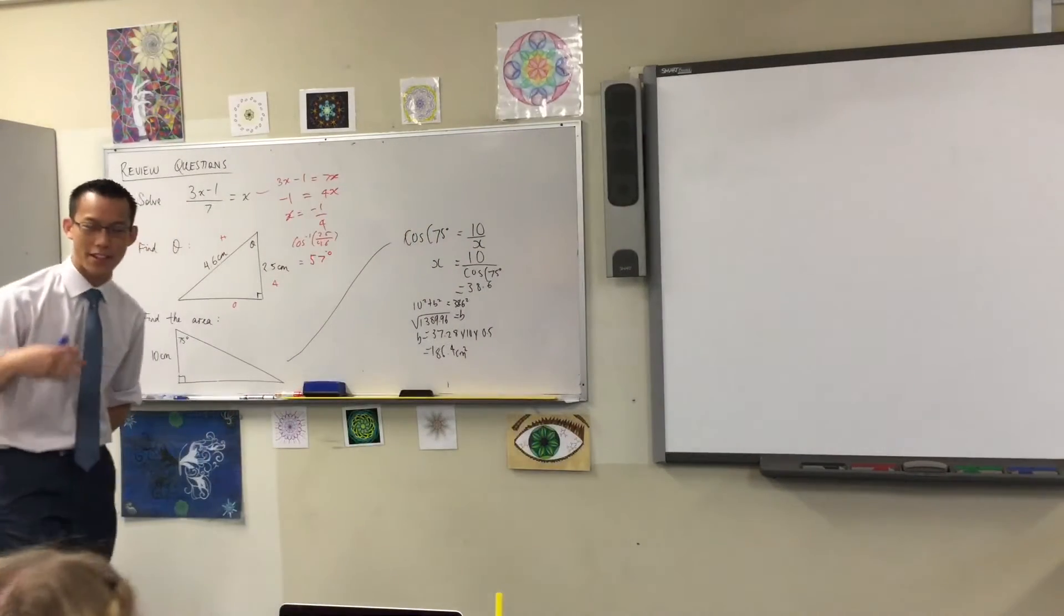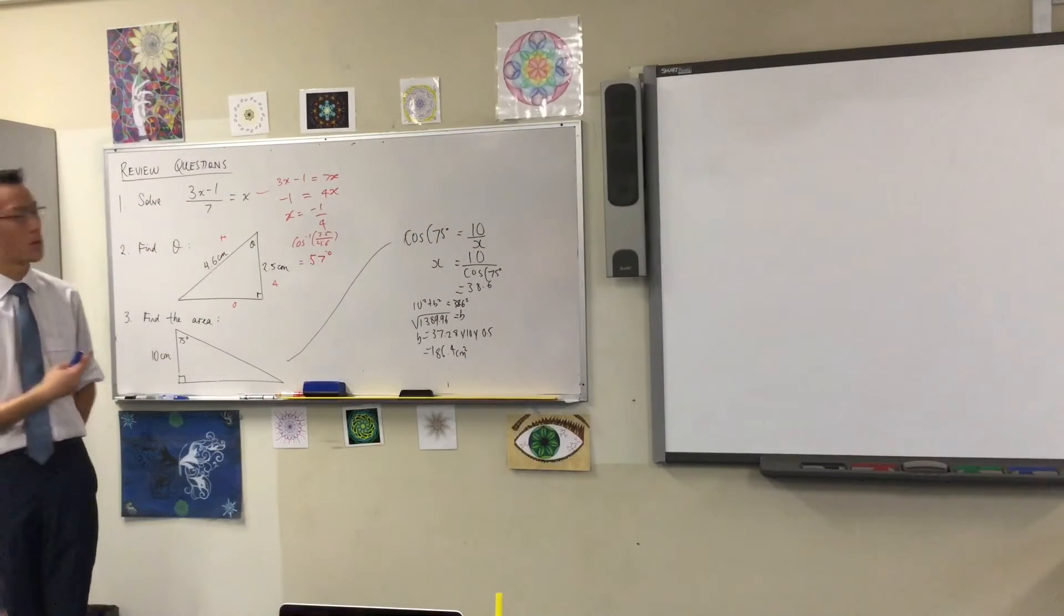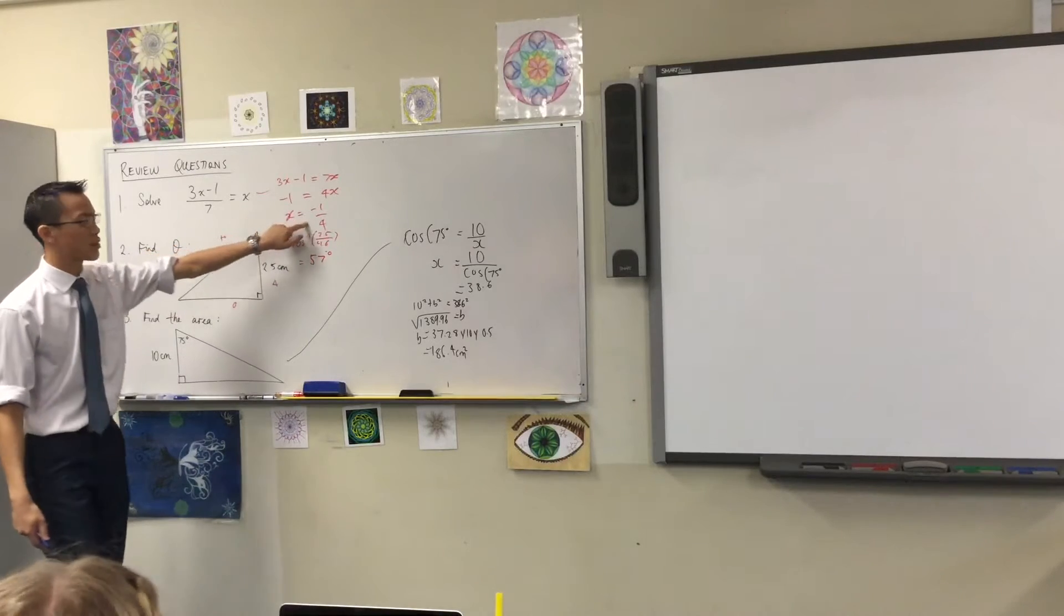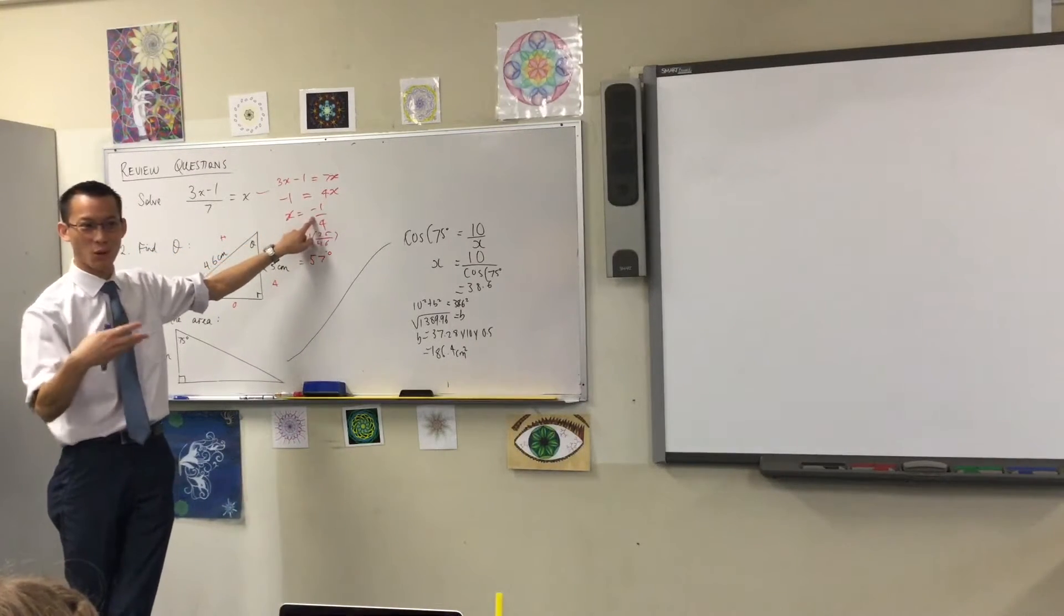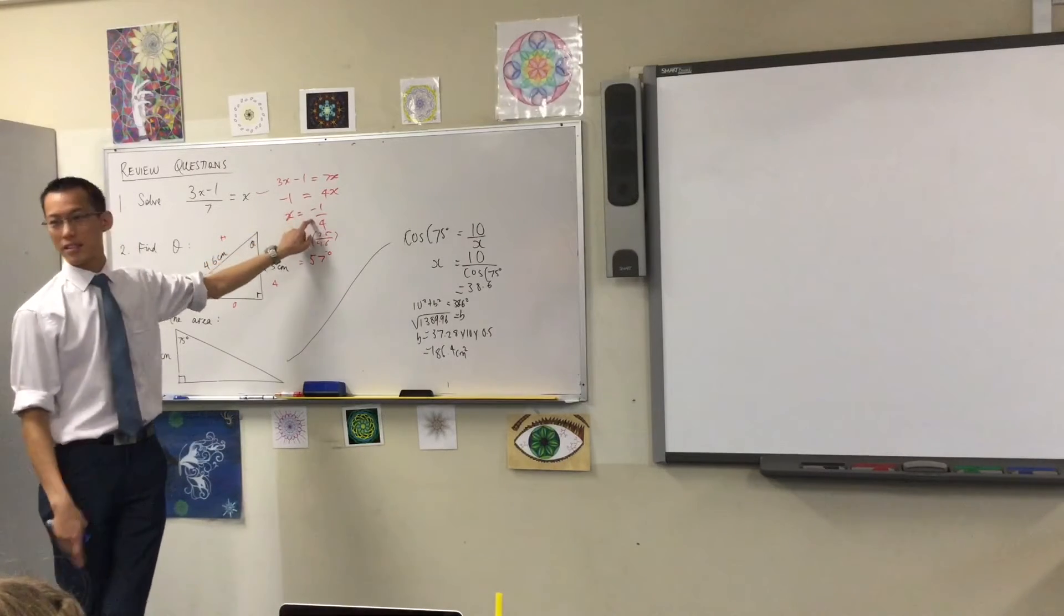Let's just quickly think about the answers first and then we'll come to the working out. x equals negative a quarter. Thumbs up? Happy? Even though it does look weird, it's negative, it's a fraction.